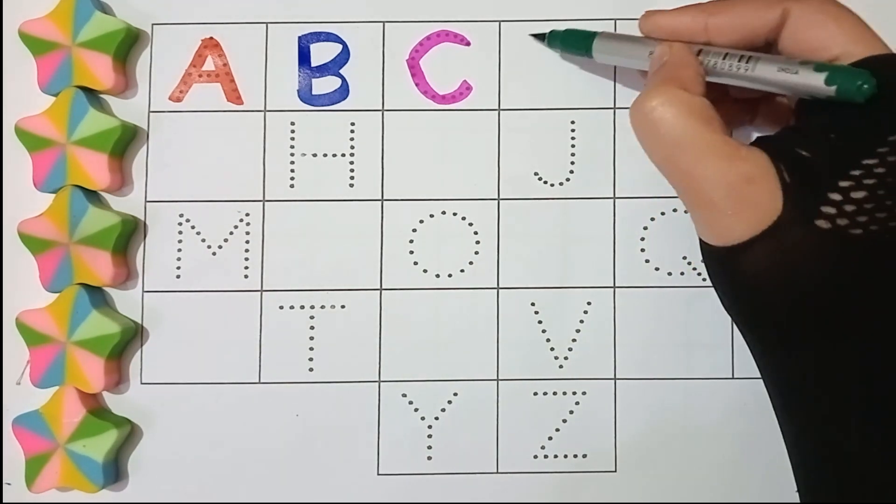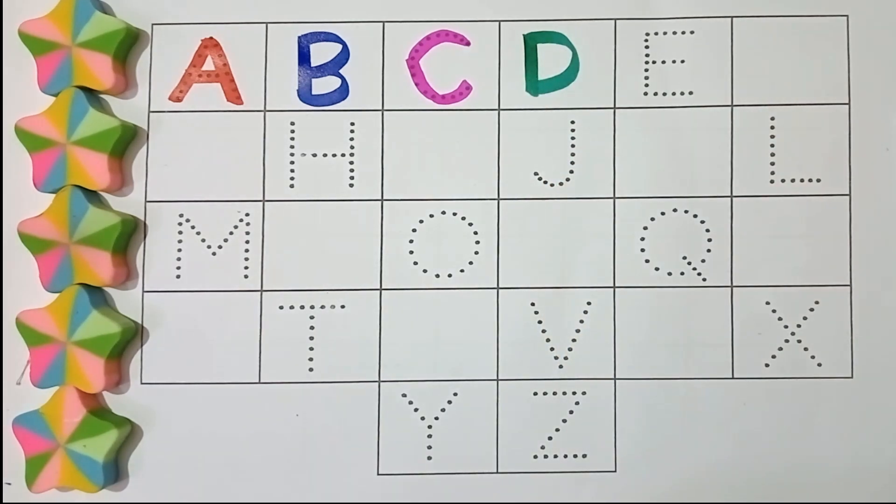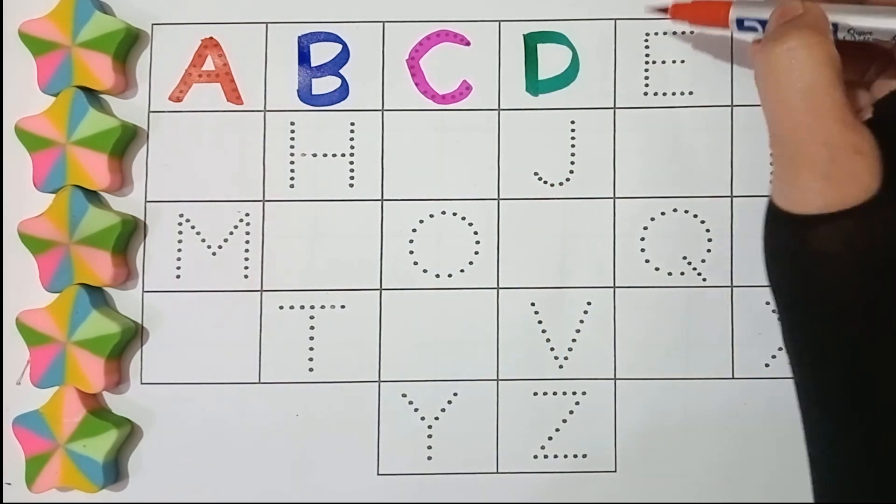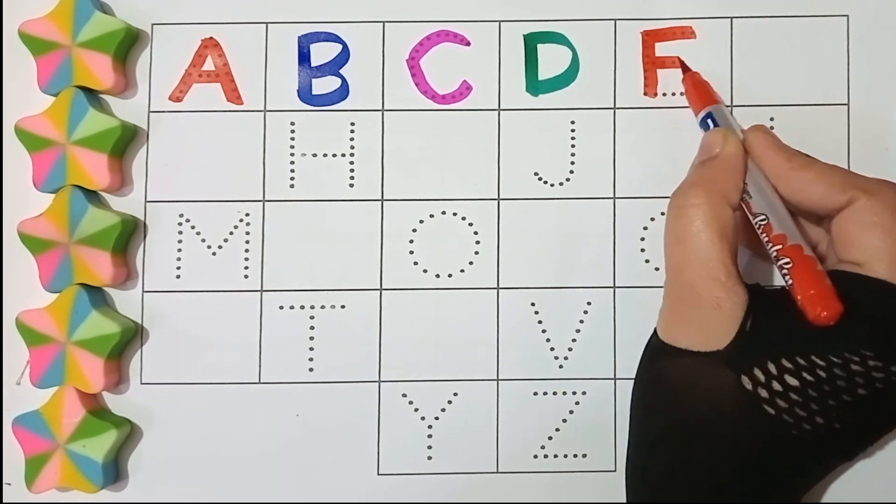Green color. D, D for doll, D. Red color. E, E for egg, E.